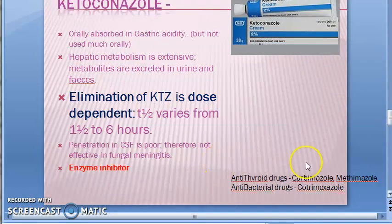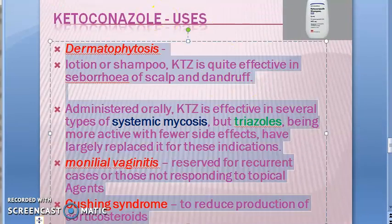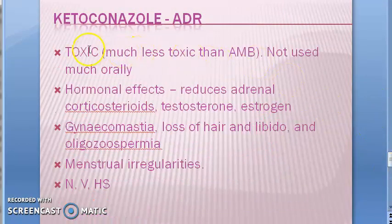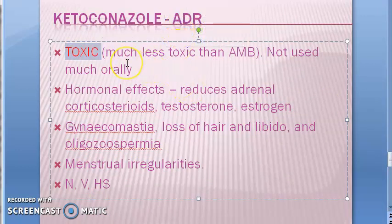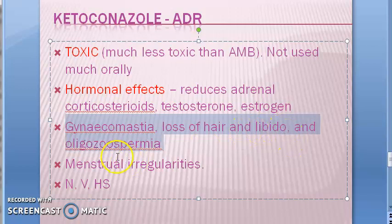For candidiasis and similar infections, ketoconazole can also be given. Moving on to adverse drug reactions — ketoconazole is very toxic. It is the most toxic of the azoles, though less toxic than amphotericin B. It is not used much orally due to these toxicities, and triazoles have replaced it as first-line. Hormonal effects include reduction of adrenal corticosteroids, testosterone, and estrogen. In men, reduced testosterone leads to gynecomastia, hair loss, reduced libido, and oligospermia.